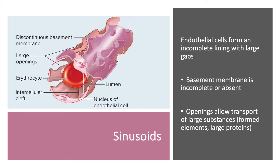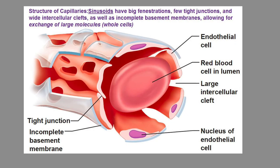Finally, we have the sinusoidal capillaries, or sinusoids — also called discontinuous capillaries because they have an incomplete lining of endothelial cells, with large gaps or openings and an absent or incomplete basement membrane. These are the most permeable of the three types. They lack many tight junctions, and 'sinus' means cavity or hole.